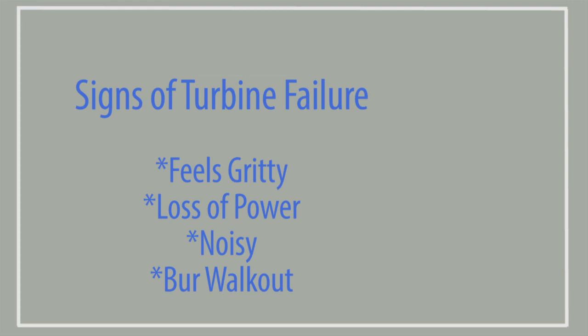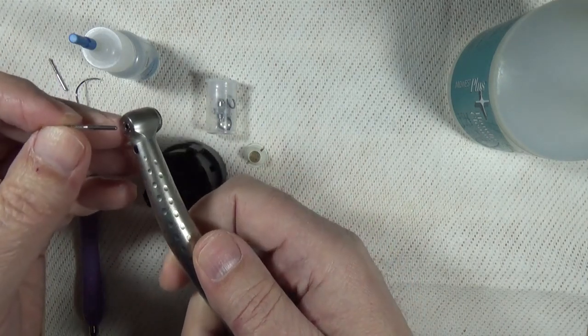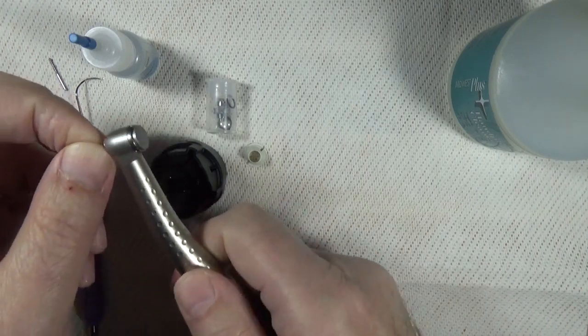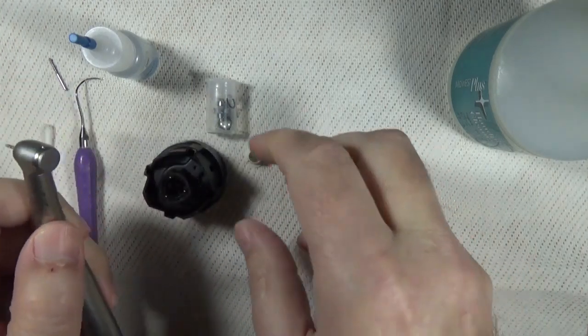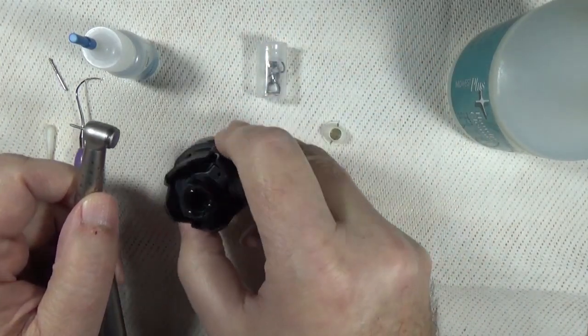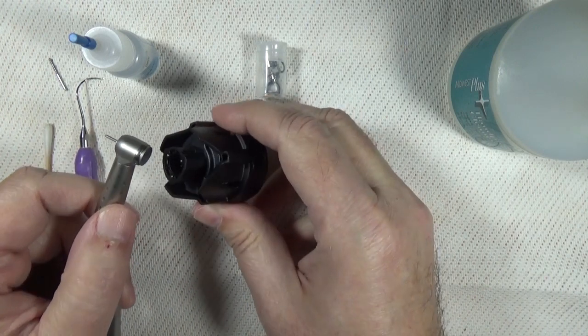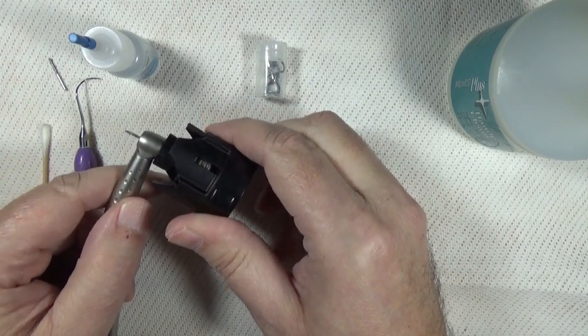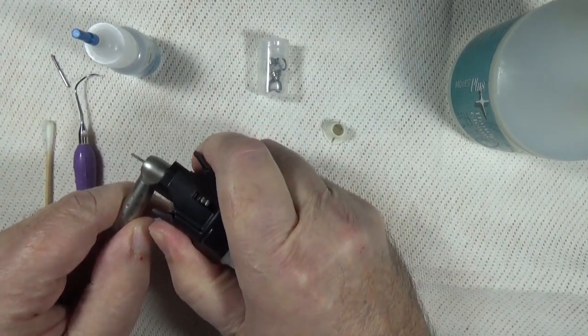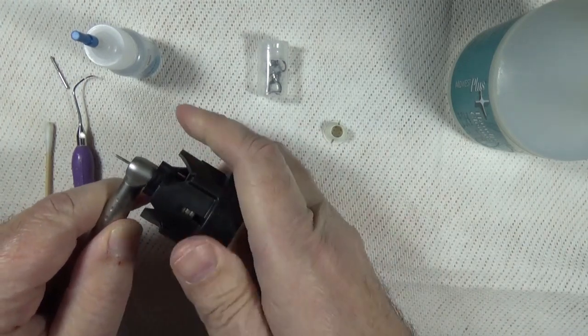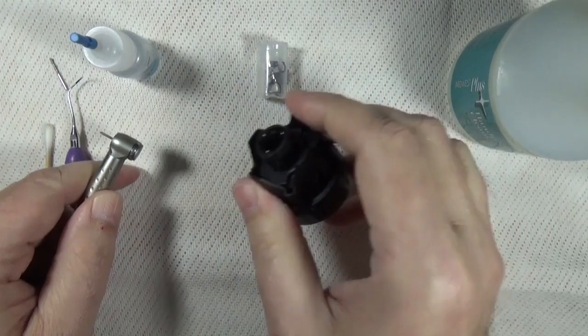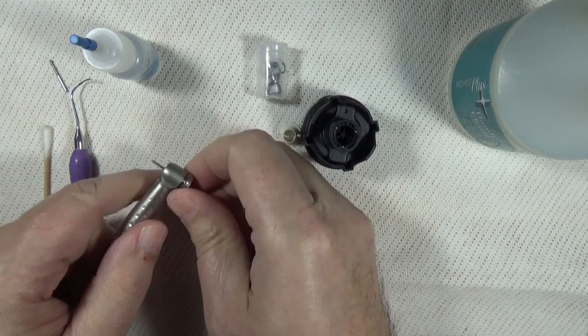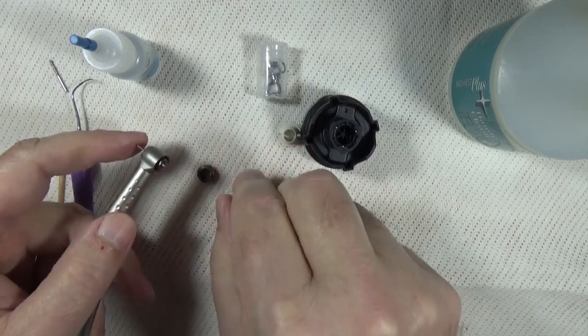We're going to start by inserting a burr into this handpiece. Push the button, fully seated. It's going to assist in inserting and removing this turbine. Then we're going to take this black back cap tool - there's three little notches around the edges of the cap. This locks in there, and if I turn it counterclockwise, break that free. Usually once it's a little bit loose, you can go ahead and spin it off with your fingers.